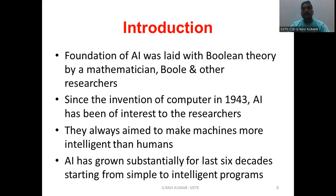In some past days, some philosophers suggested that a system can control the entire universe. So many philosophers suggested AI technology in past days. That is where the Boolean theory foundation comes from. Since the invention of the computer in 1943, AI has been of interest to researchers. After the invention of the computer, all researchers selected AI as one domain.